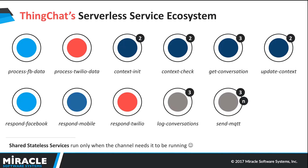This slide shows all the services in the backend. Services with a number indicate how many channels use them — GetConversation is used by all channels, centralizing the core logic. SendMQTT is marked conditional, meaning it's only called when an actual IoT command is issued. For general queries like 'hello' or 'what can you do,' there's no command to send to the Raspberry Pi, so sendMQTT is not invoked.